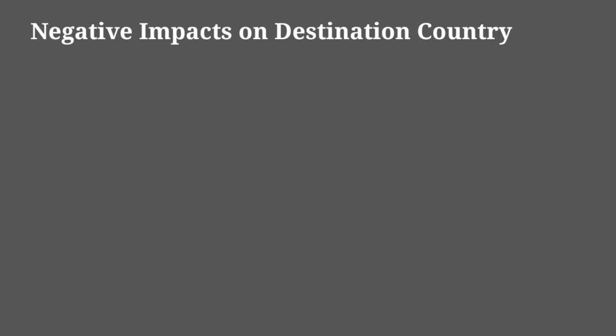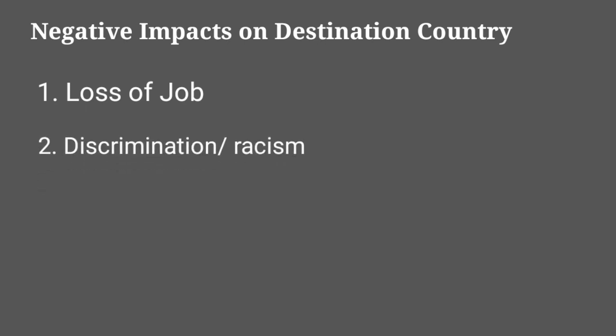Now, moving to the negative impacts of migration on the destination country. The first negative impact is job loss. Immigrants may cause job loss issues as locals often lose jobs to incoming workers. For example, cheap labor coming from Bangladesh to India, or from other less developed countries, means that local Indian workers lose their jobs because employers will hire laborers who work for lower wages.